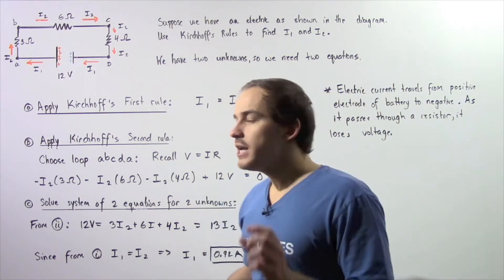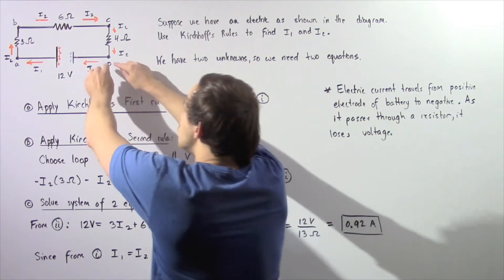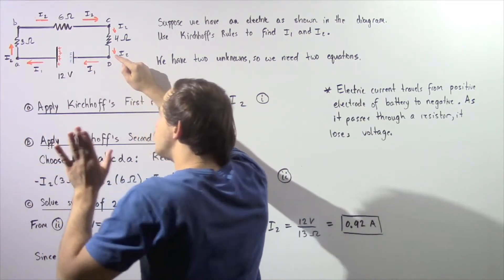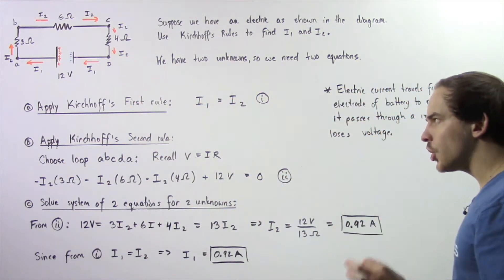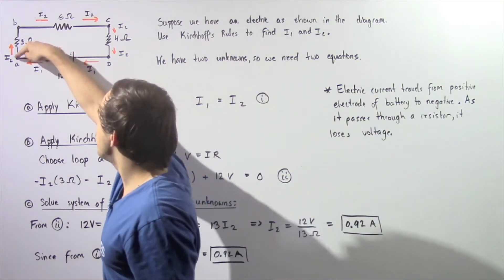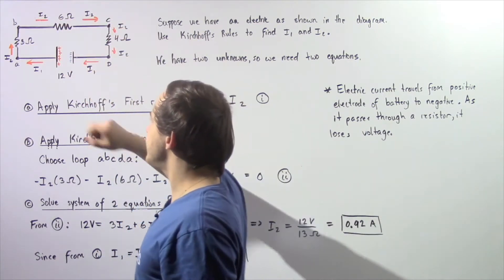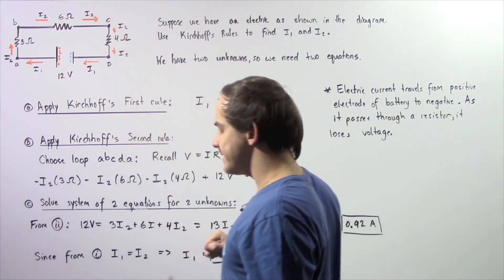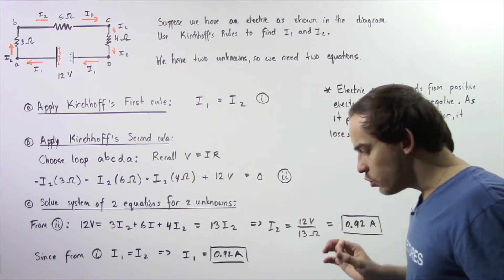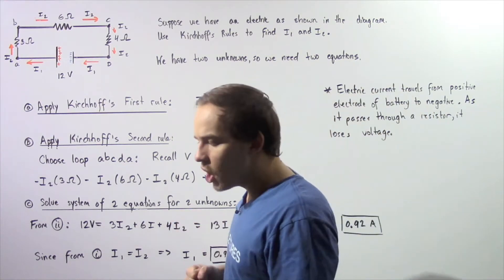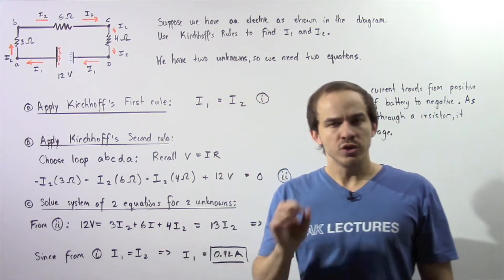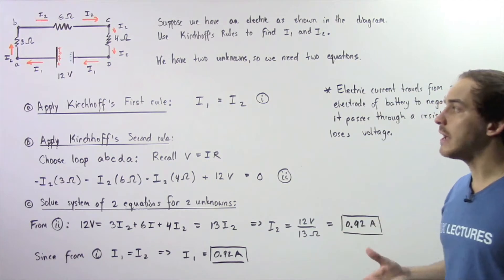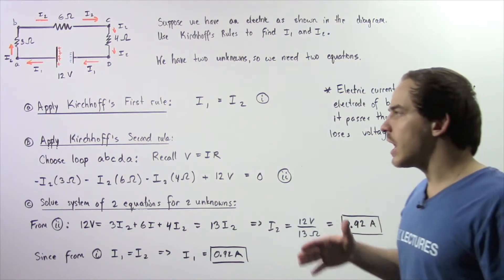We define I1 to be the electric current that flows through the region of our wire from D to A. We define I2 to be the electric current that flows through the section of our circuit beginning at point A, going to point B, to point C, and to point D. We have 2 unknowns, so we need 2 equations, which we can obtain using Kirchhoff's 1st and 2nd rules.